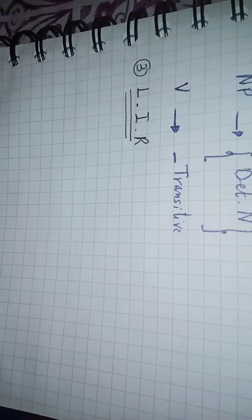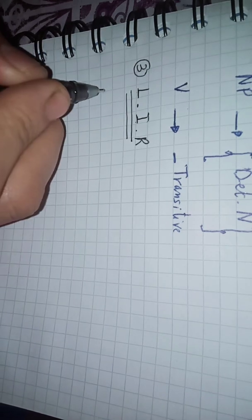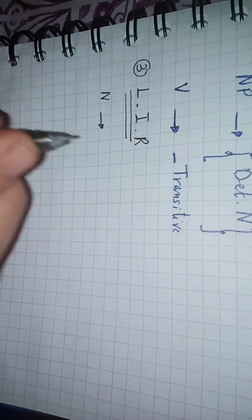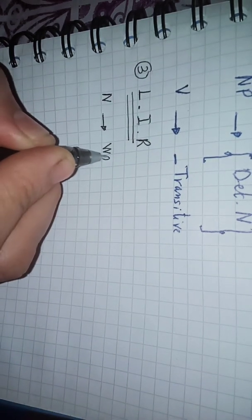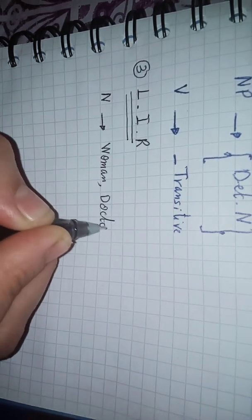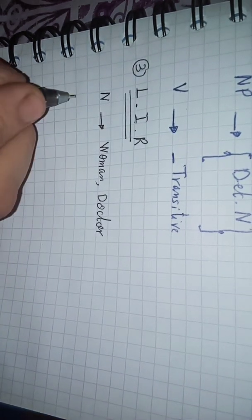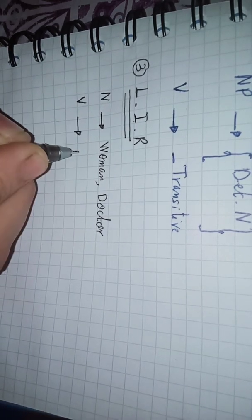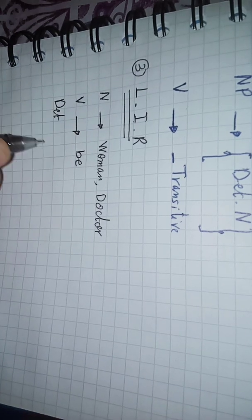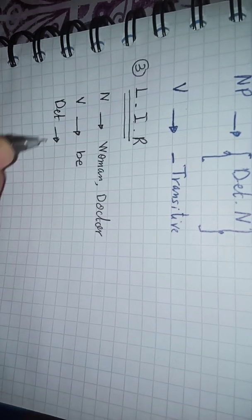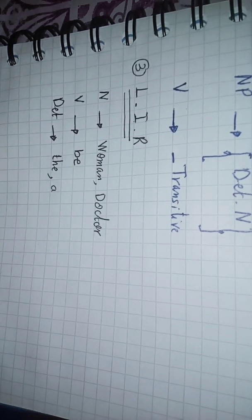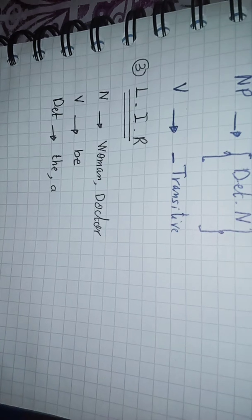So in this sentence we have as nouns two common nouns which are woman and doctor. Our verb is the verb to be and our determiners are the two articles the and a. This is all we have in this sentence.